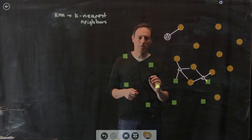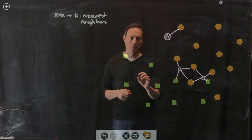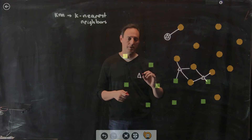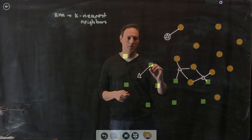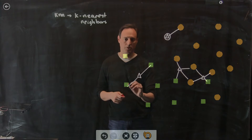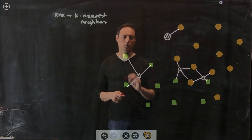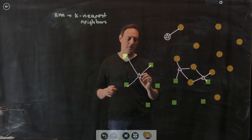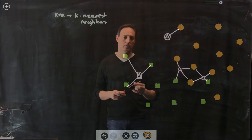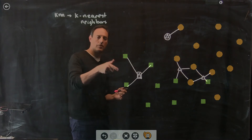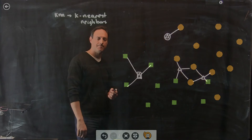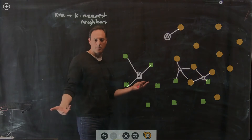That's the idea — you can have nearest neighbors making decisions for you: not just one, but three, five. You don't want to pick an even number because you can get a tie. For a point clearly surrounded by squares — using three nearest neighbors, all three votes go to squares — and that point is clearly classified as a square.